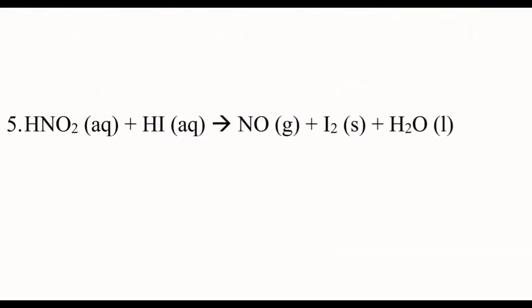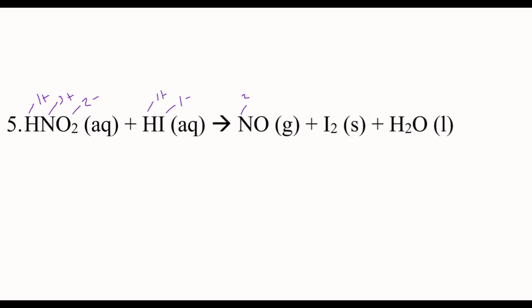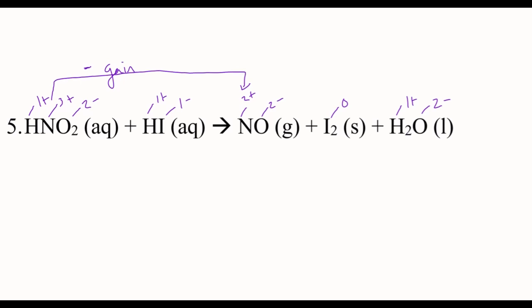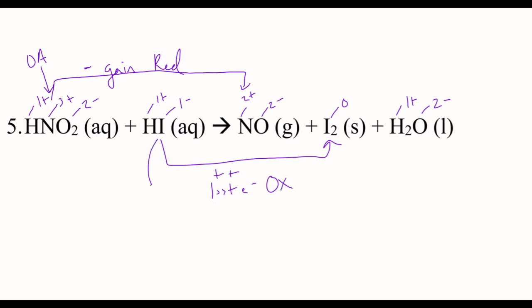Last one. Label the oxidation numbers — the first N is 3+; it's 1+, 3+, 2−. The change here is for nitrogen: it goes from 3+ to 2+, so it's becoming more negative. That is a gain in electrons, so nitrogen is our oxidizing agent. Then iodine goes from −1 to 0, which is more positive — that is a loss of electrons, LEO, so oxidation. And that is the reducing agent.